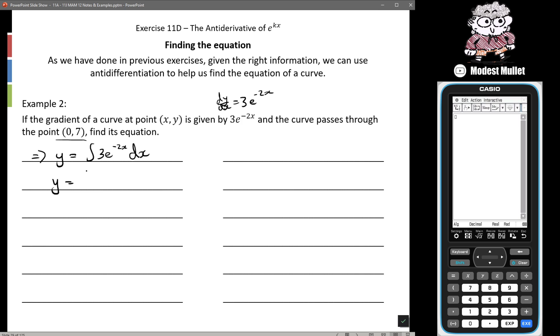So y will be equal to negative 3 on 2 e to the negative 2x plus c. And we're told that when x is 0, y is 7. So we're going to sub in that 0 comma 7. So we'll get 7 is equal to negative 3 on 2 e to the negative 2 times 0 plus c. We get 7 is equal to negative 3 on 2 e to the 0 plus c.